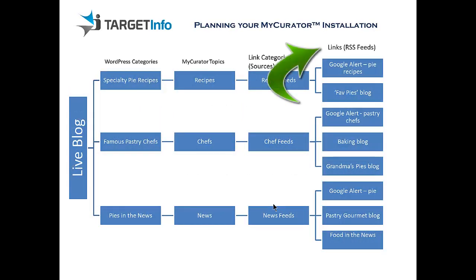Now you can plan which actual alerts and feeds are going to be used for each link category. You can have as many feeds and alerts per category as you like. You can use the News or Twitter menu item under Links to create Google News Feed or Twitter searches that are automatically posted as links.